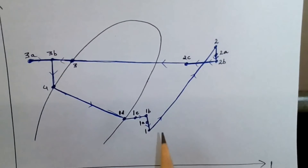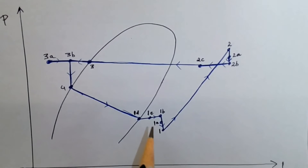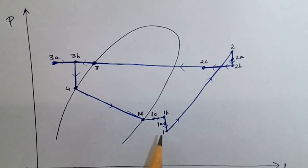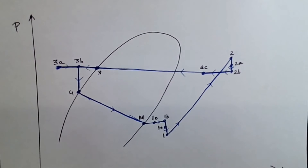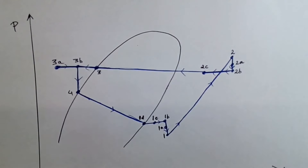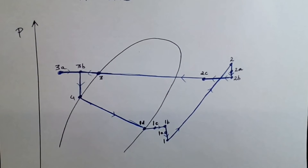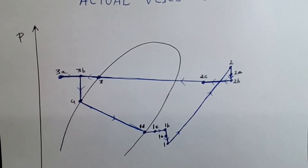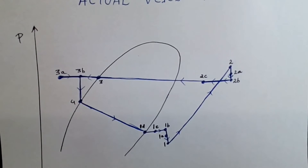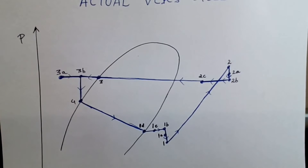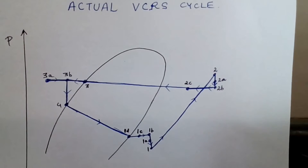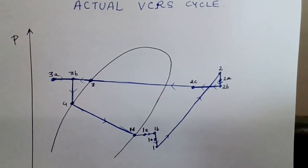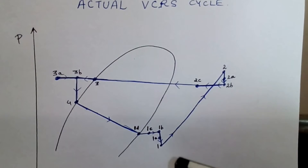From 1a to 1 there is a further pressure drop. When the vapor refrigerant enters the inlet valve of the compressor, there is a pressure drop due to the wire-drawing effect, also called the throttling effect.